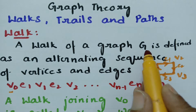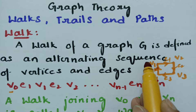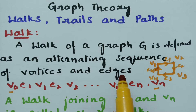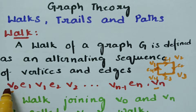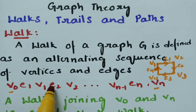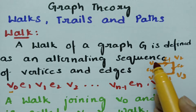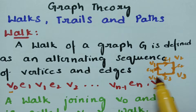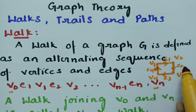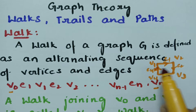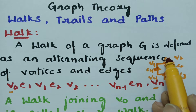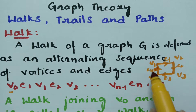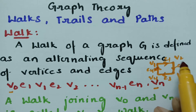A walk of a graph G is defined as an alternating sequence of vertices and edges. We have to take alternately one vertex, one edge, one vertex, one edge, and so on till the end. For example, if I take four vertices V1, V2, V3, V4 and four edges E1, E2, E3, E4, then V1, E1, V2, E2, V3, E3, V4, E4 — this is nothing but the walk.